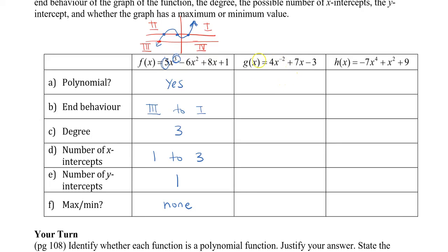For the second function g(x), because one of the exponents is negative — and exponents are not allowed to be negative in a polynomial — this is not a polynomial.